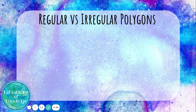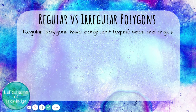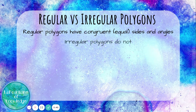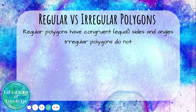Regular vs. irregular polygons. Regular polygons have congruent — which means equal — sides and angles. Irregular polygons do not. Let's take a look at some regular vs. irregular polygons.